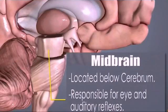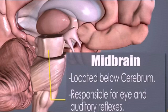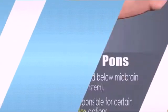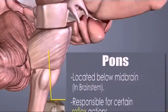Midbrain is located below the cerebrum and is responsible for the eye and auditory reflexes. Pons, located below the midbrain, is responsible for reflex actions and protects us from danger.